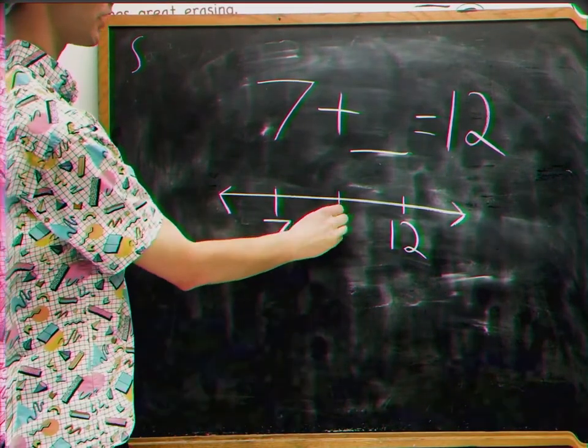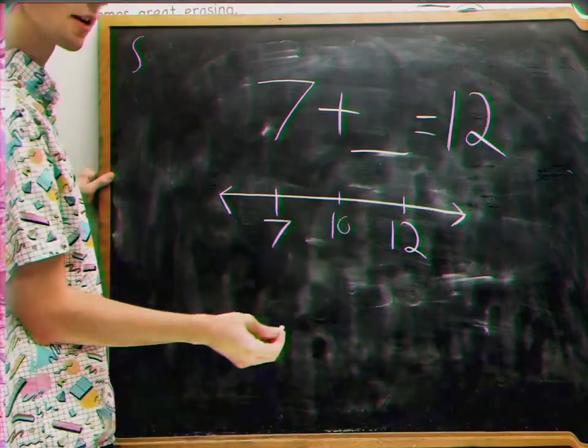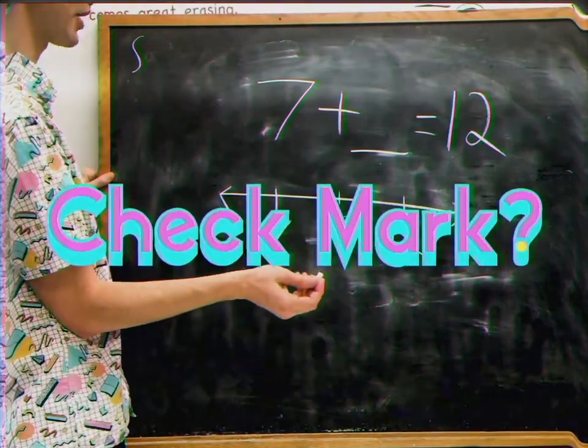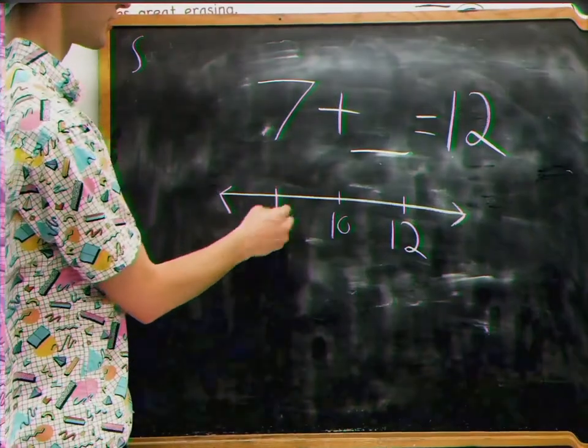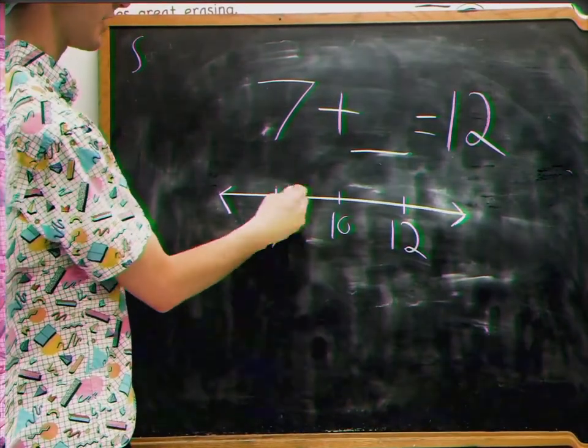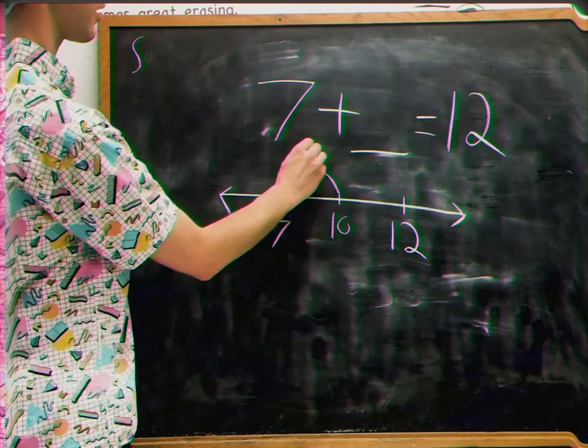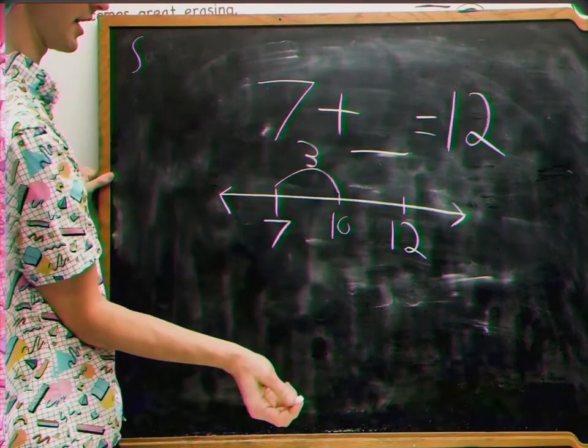And kind of like last time, we're going to use 10 as our checkpoint. So from 7 to 10, how far is that? Well, yep, that's right, 3, because 7 plus 3 is 10.